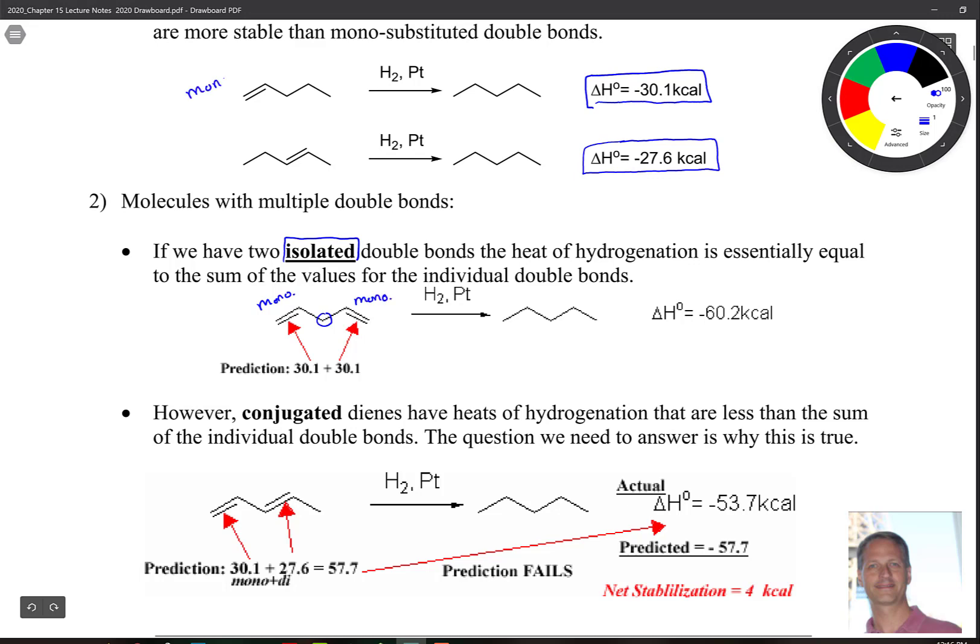So over here on the top, that's monosubstituted here. And then remember this is disubstituted. So mono and mono is negative 30 plus negative 30, kcals per mole here. And that's what we predict when we just add them up. And experimentally, we get this number. So they match. Our experimental data matches what our prediction is.